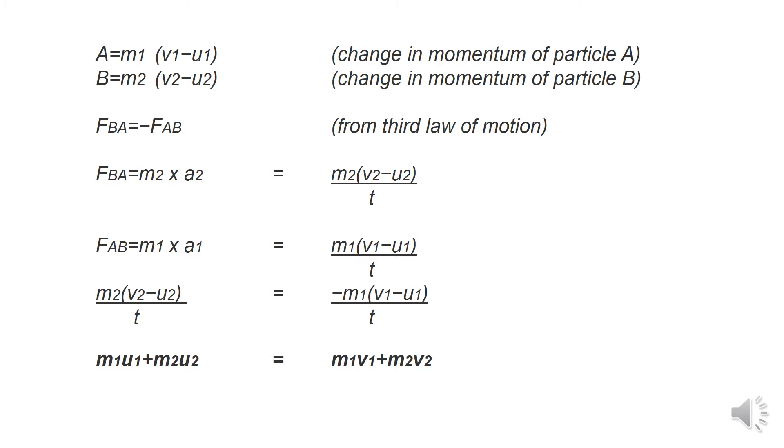So you can see that the change in momentum of particle A would be M1 times V1 minus U1 and change in momentum of particle B would be M2 times V2 minus U2.